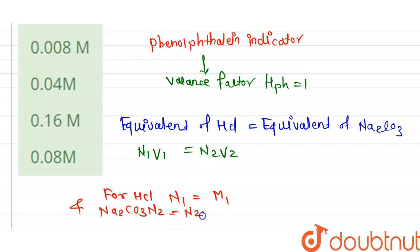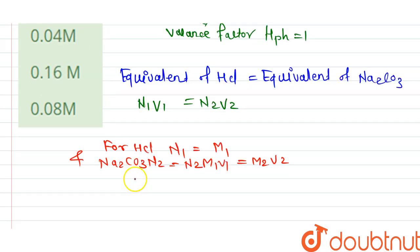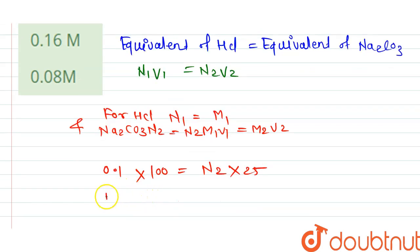N1V1 is equal to M1V1 is equal to M2V2. So let's check for HCl. HCl molarity is 0.1 into 100 ml is equal to N2, N2 is normality into 25 ml. So N2 is equal to 0.4.